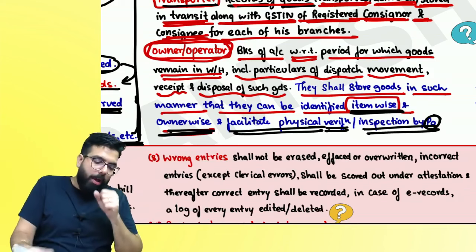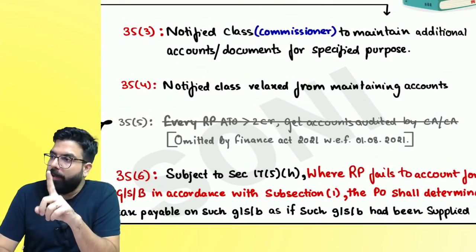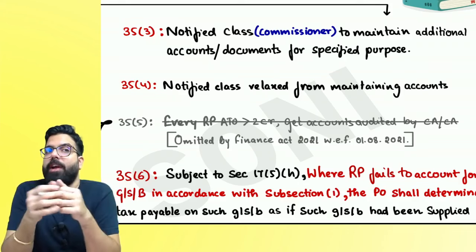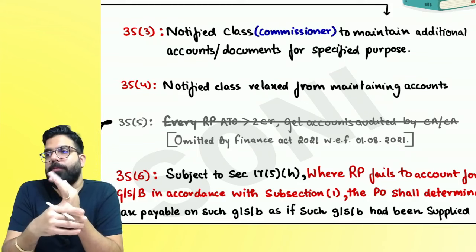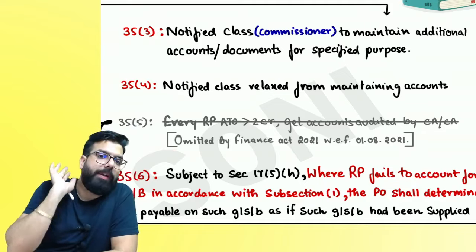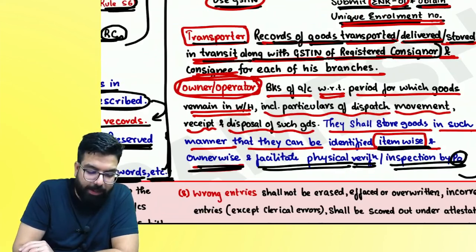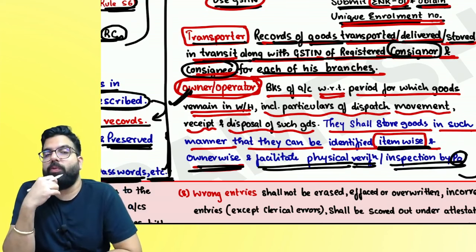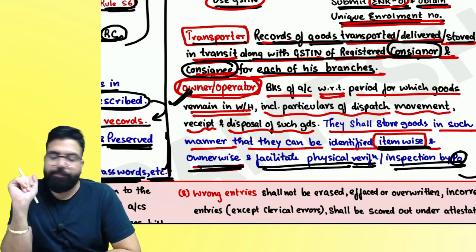Summary of Section 35.2: Is an unregistered person required to maintain accounts? Yes — transporter and owner/operator of warehouse. If registered, they have GSTN. If unregistered, they need a unique enrollment number. Transporter maintains: branch-wise, GSTN-wise records of goods transported, delivered, stored in transit, along with GSTN of registered consignor and consignee. Owner/operator maintains: item-wise and owner-wise details.